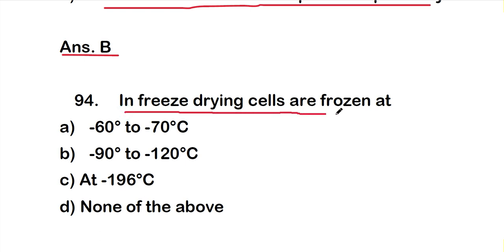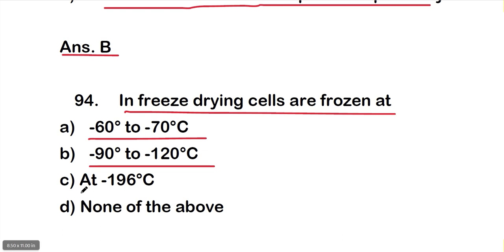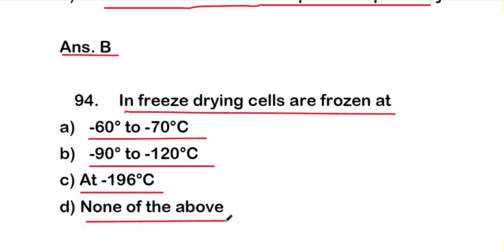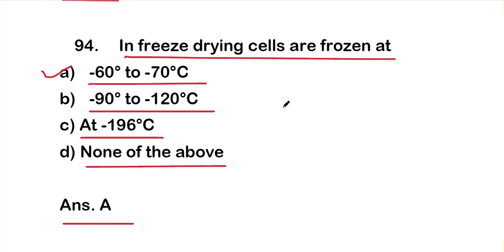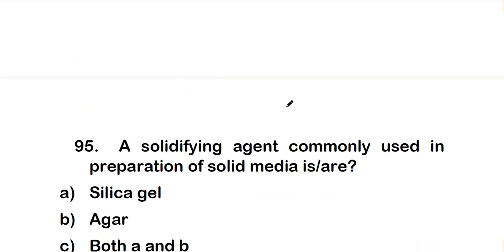Question number 94: In freeze-drying, cells are frozen at — option A: minus 60°C to minus 70°C, option B: minus 90°C to minus 120°C, option C: minus 196°C, option D: none of the above. The right answer is option A — cells are frozen at minus 60°C to minus 70°C in freeze-drying.